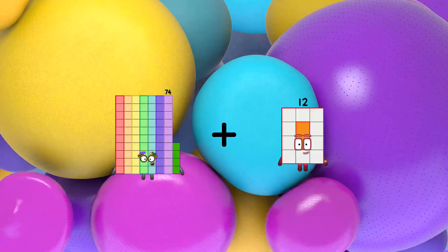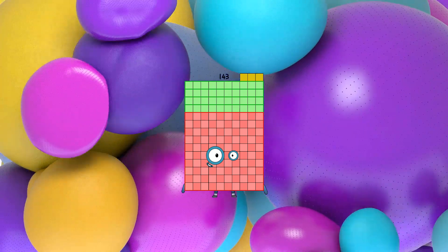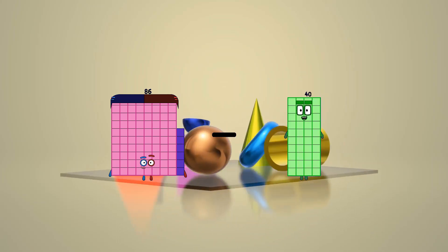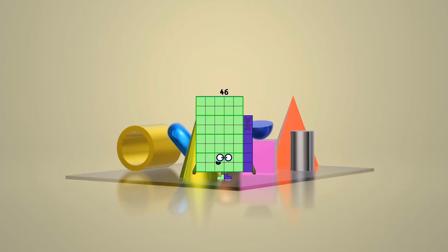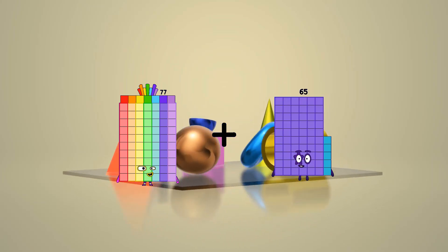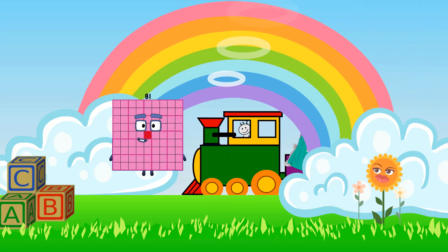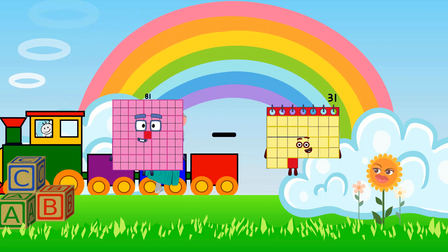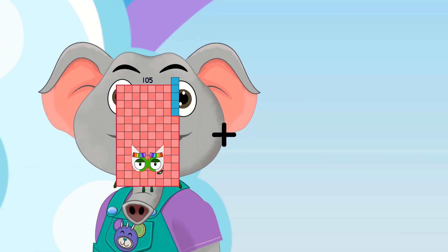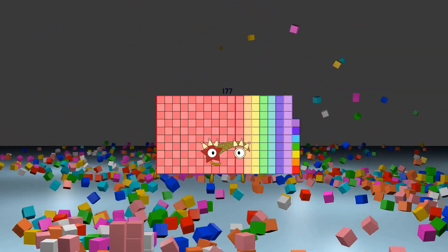74 plus 69 equals 143. 86 minus 40 equals 46. 77 plus 65 equals 142. 81 minus 73 equals 8. 105 plus 72 equals 177.